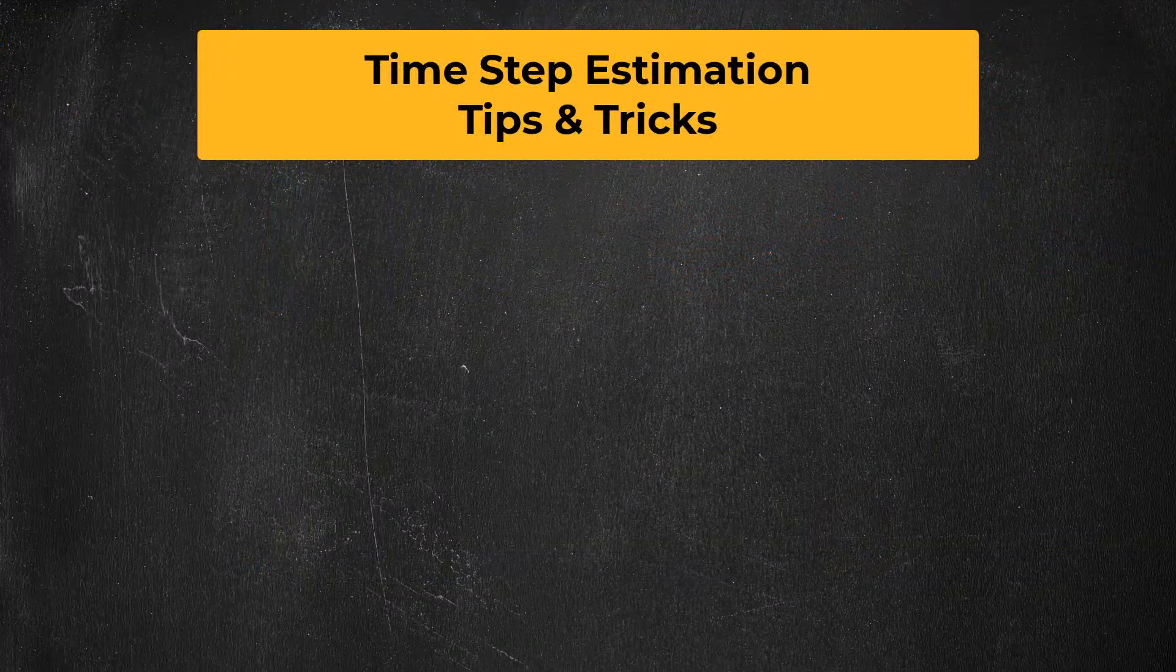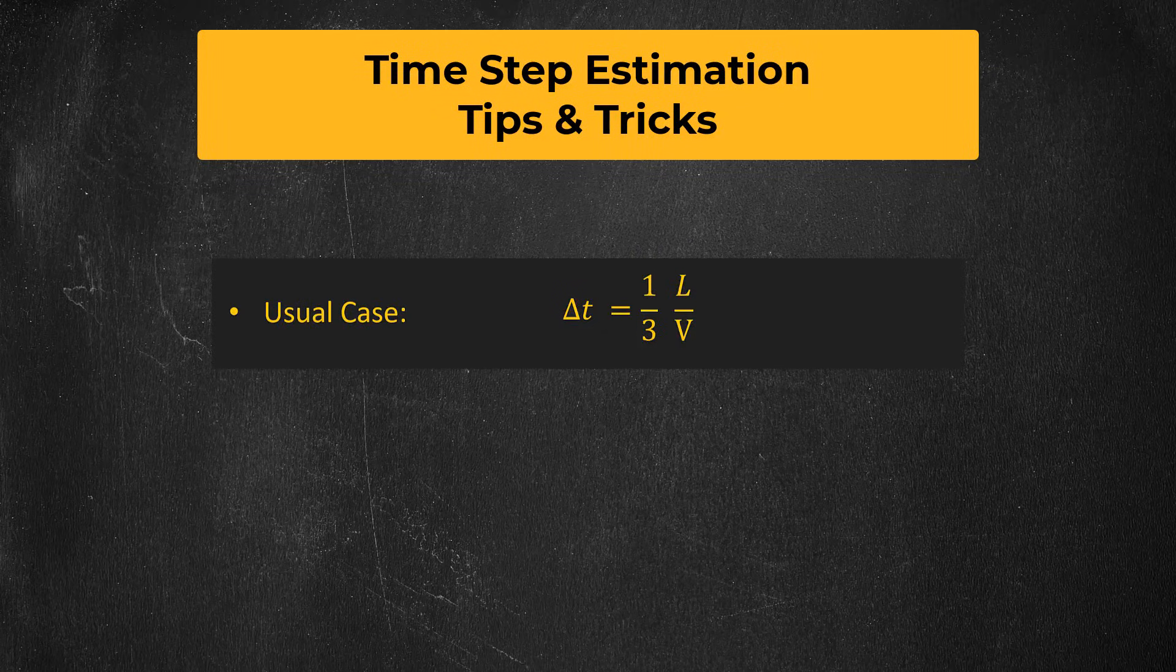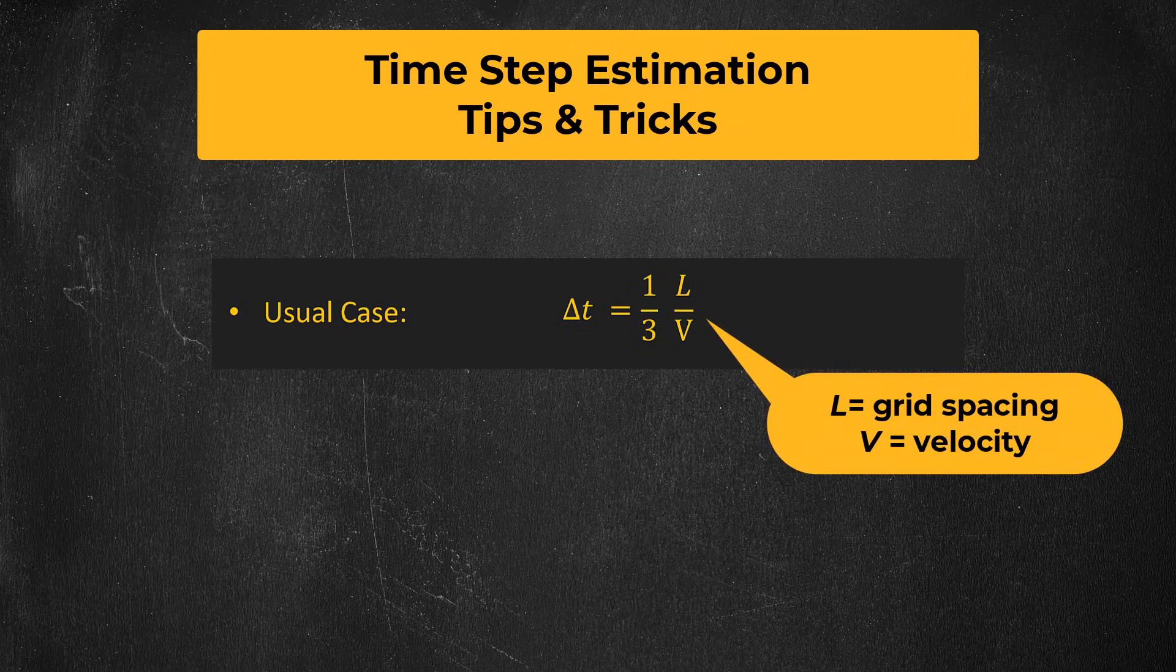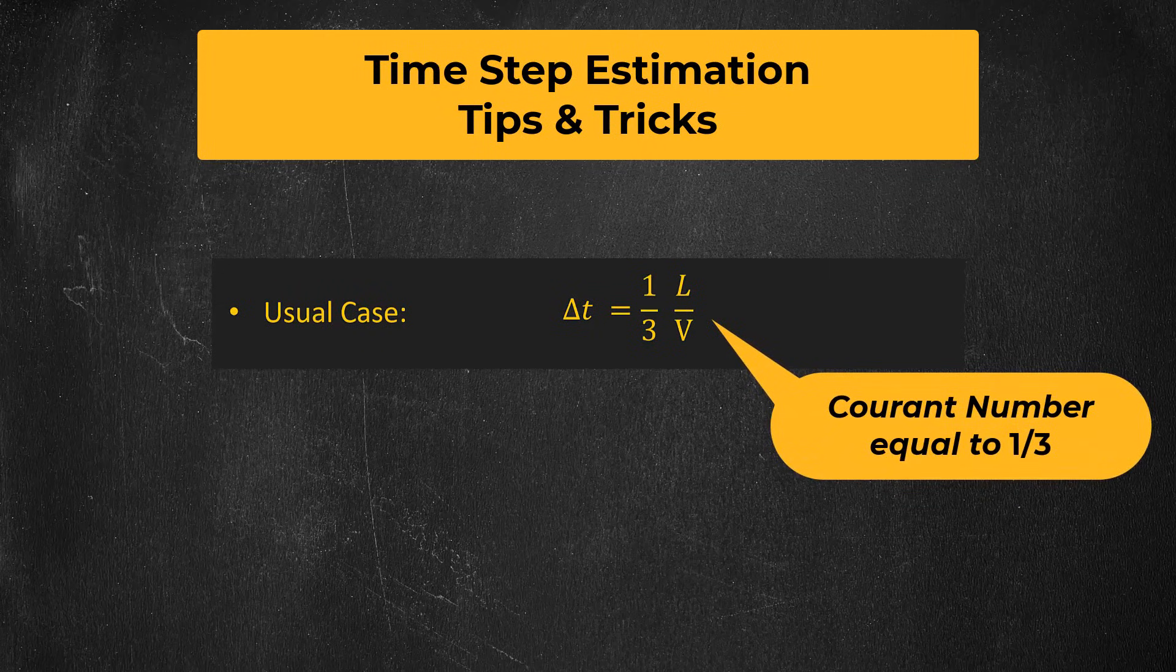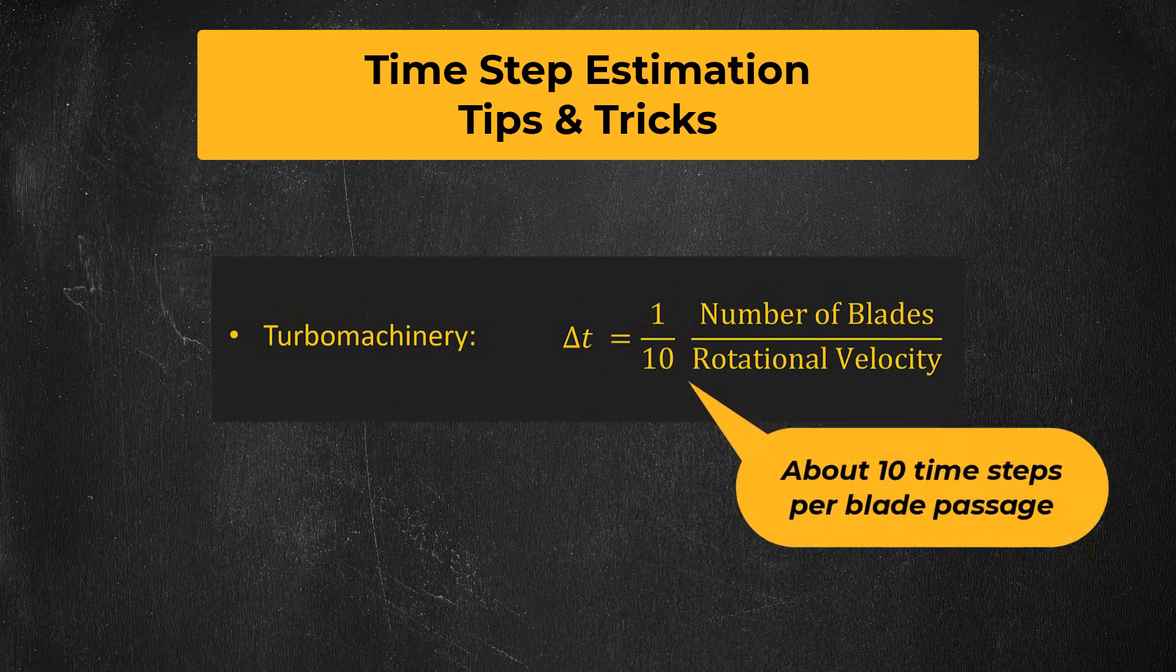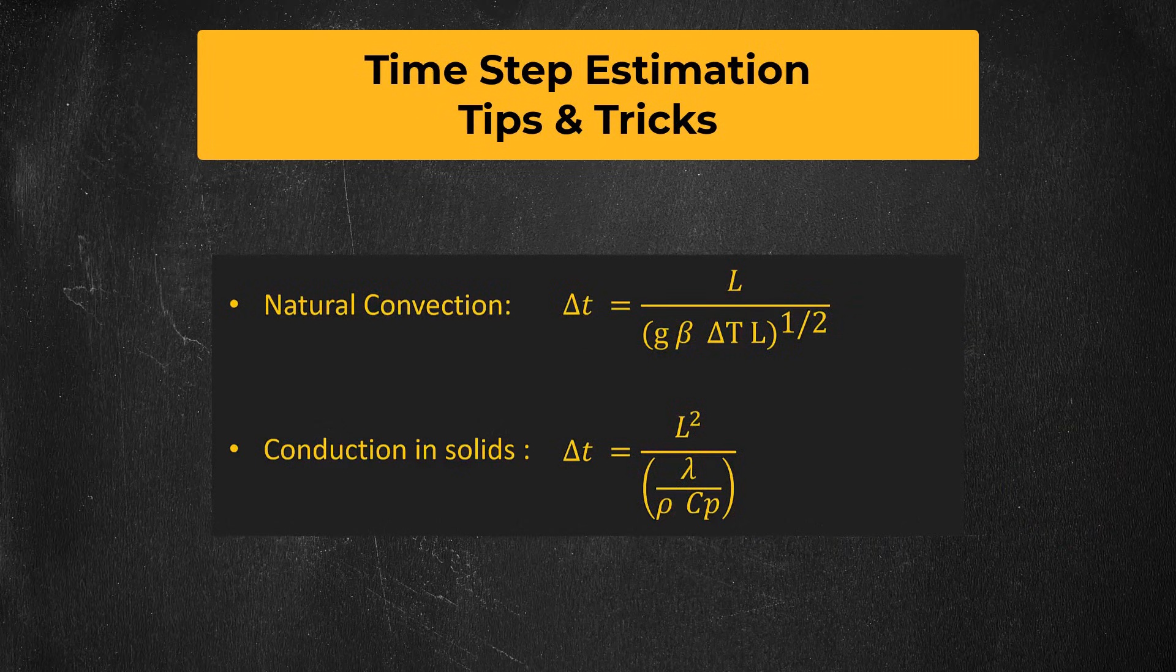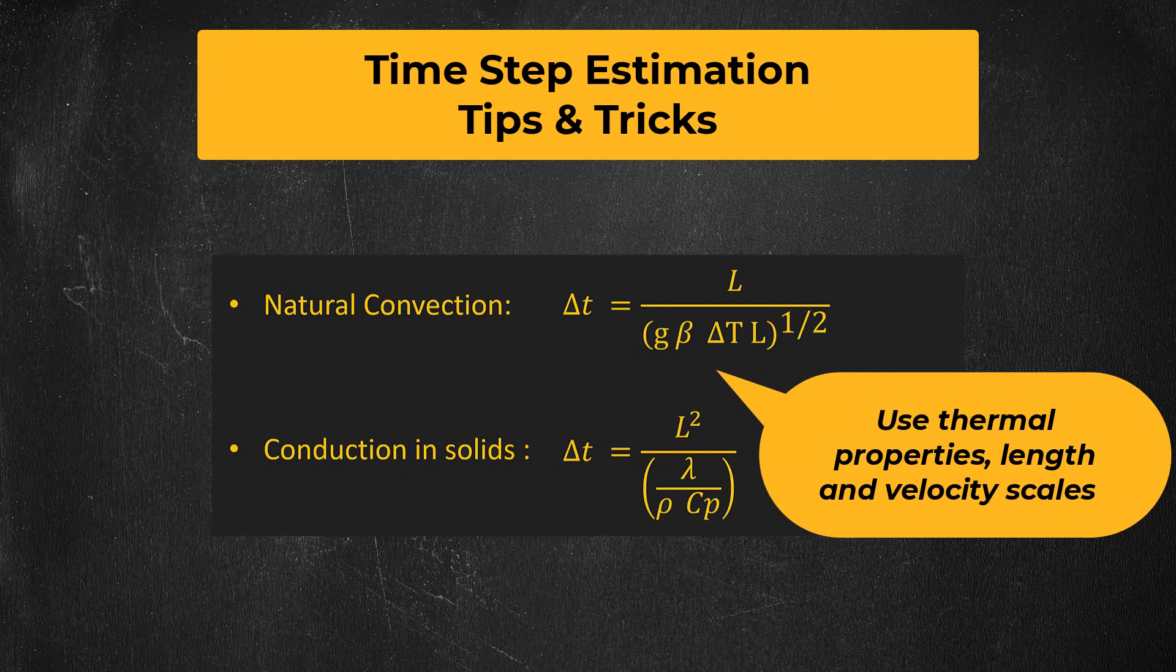For certain kinds of problems, there are ways that you can estimate your time step size. For general cases, you can set delta t equal to one-third l divided by v, where l is the grid spacing and v is the velocity. If you remember the equation for the Courant number, this is like setting that to one-third, so it is very conservative. Depending on your objectives, you might try to start with this value and if convergence is good, then you can try increasing it. In turbo machinery cases, you want to have about 10 time steps per blade passage, and in natural convection or conduction in solids, you can use characteristic length scales and velocity scales together with thermal properties to estimate the time step size.